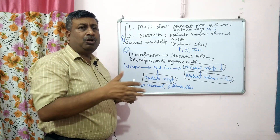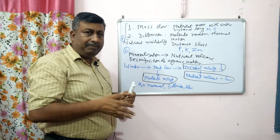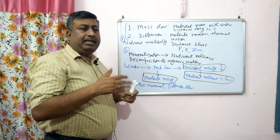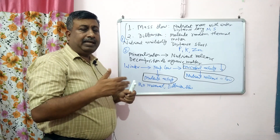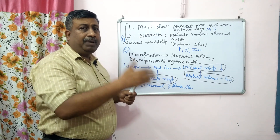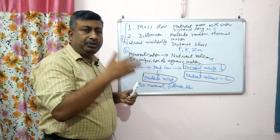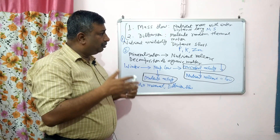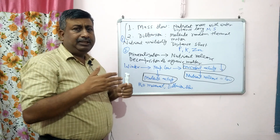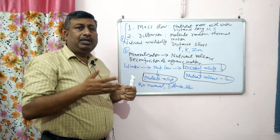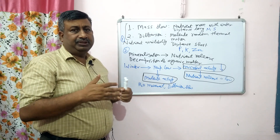It is not like the nutrients are not available — they are available — but their release is slow and their availability to the plant root is slow, so plants may suffer from nutrient deficiency.